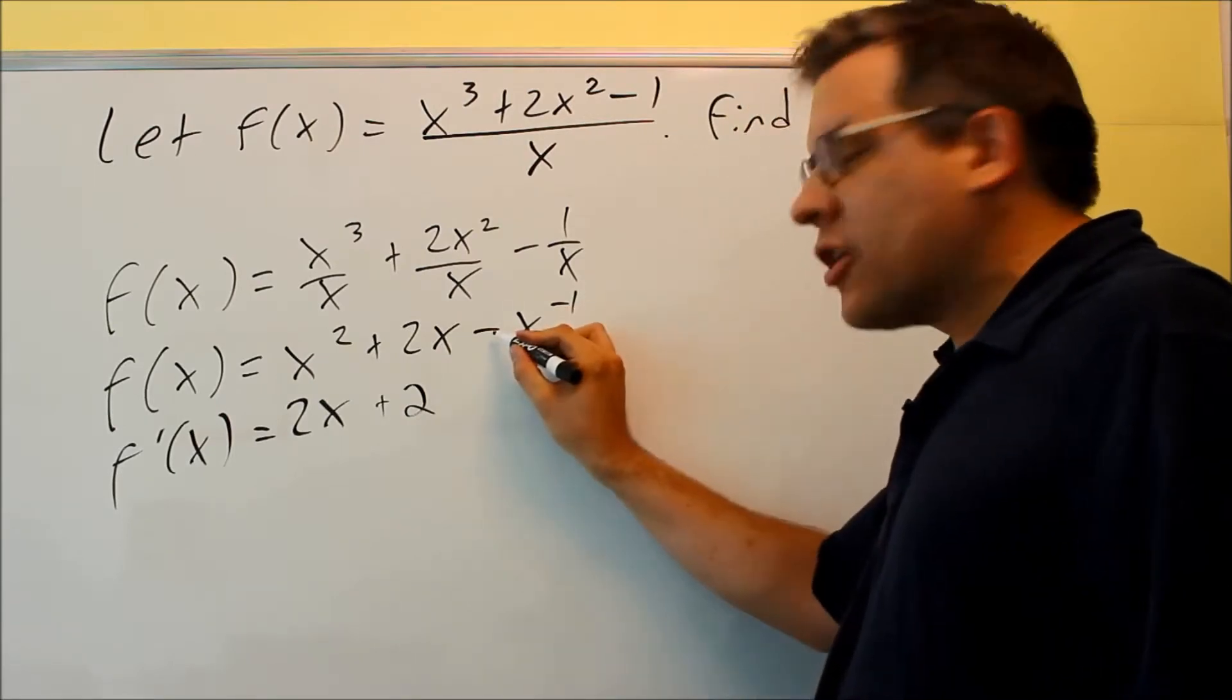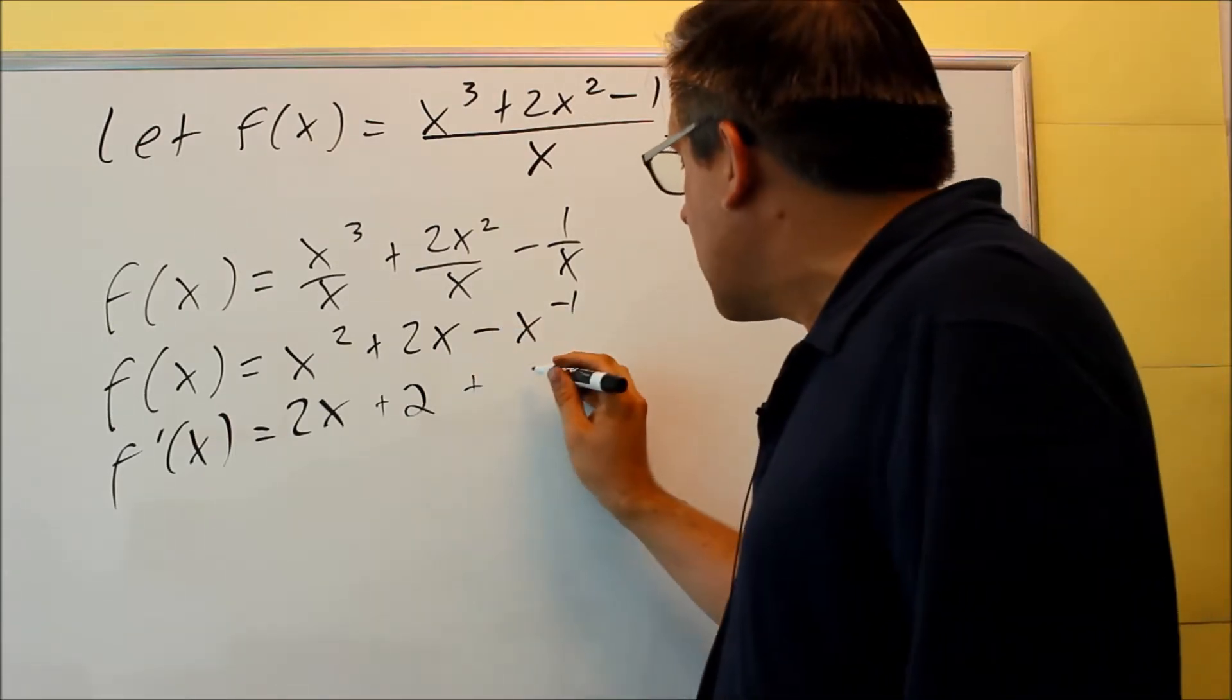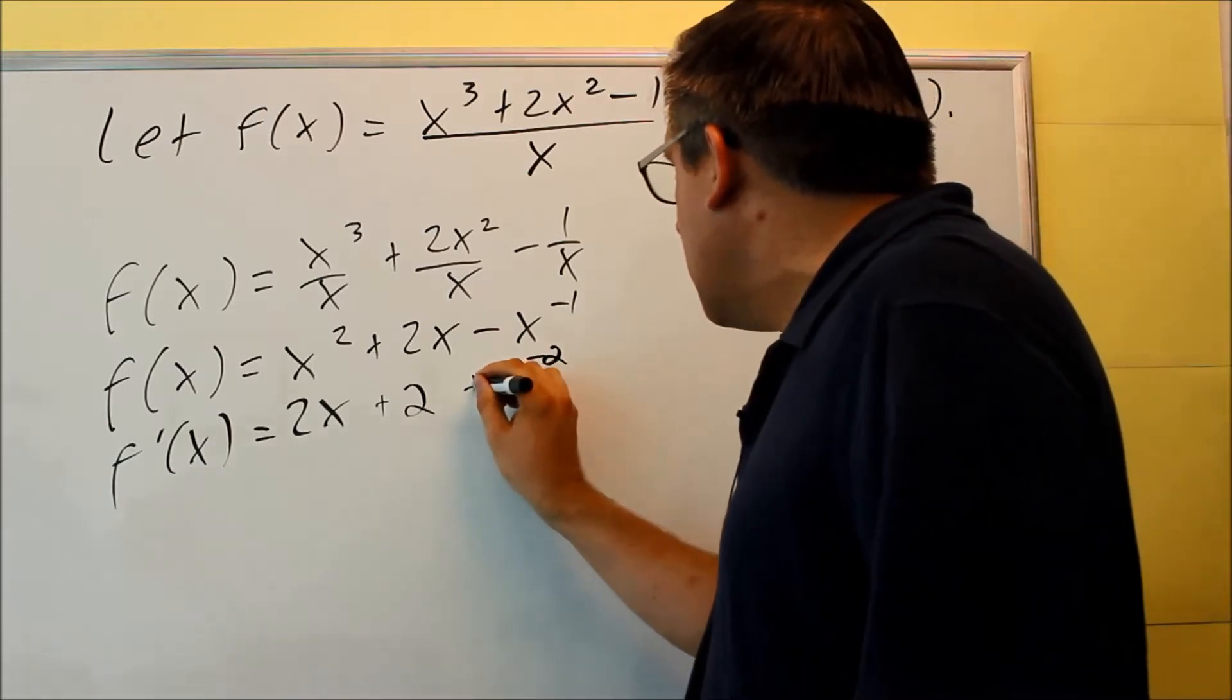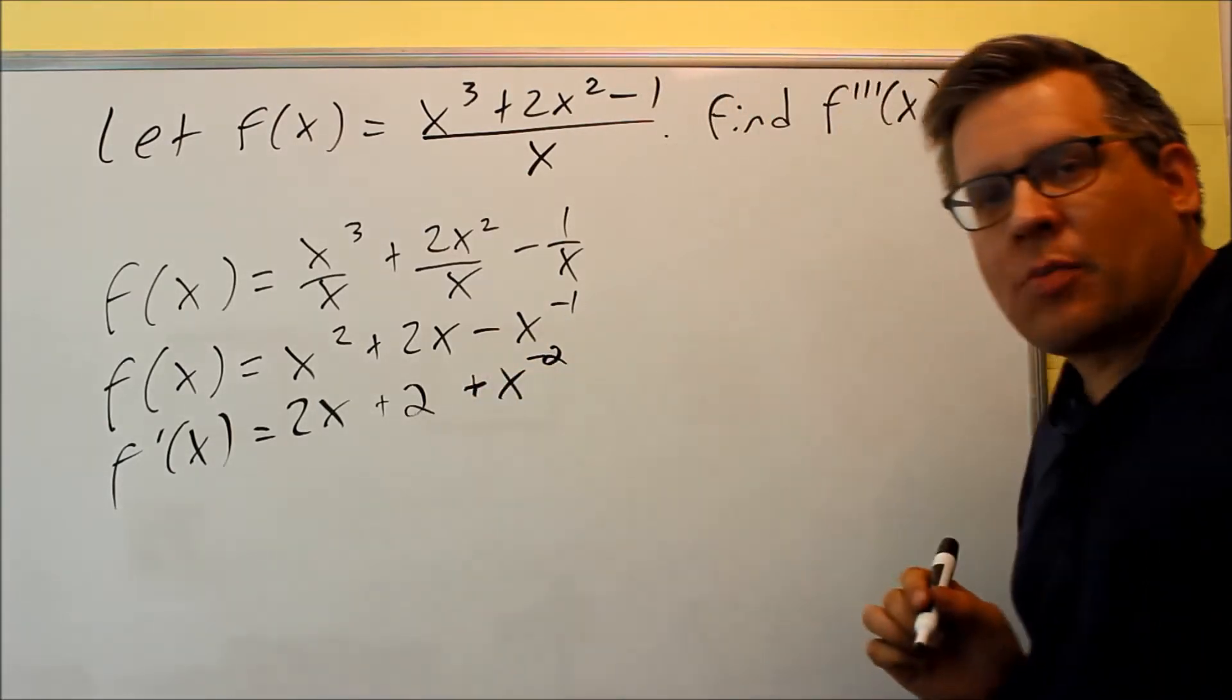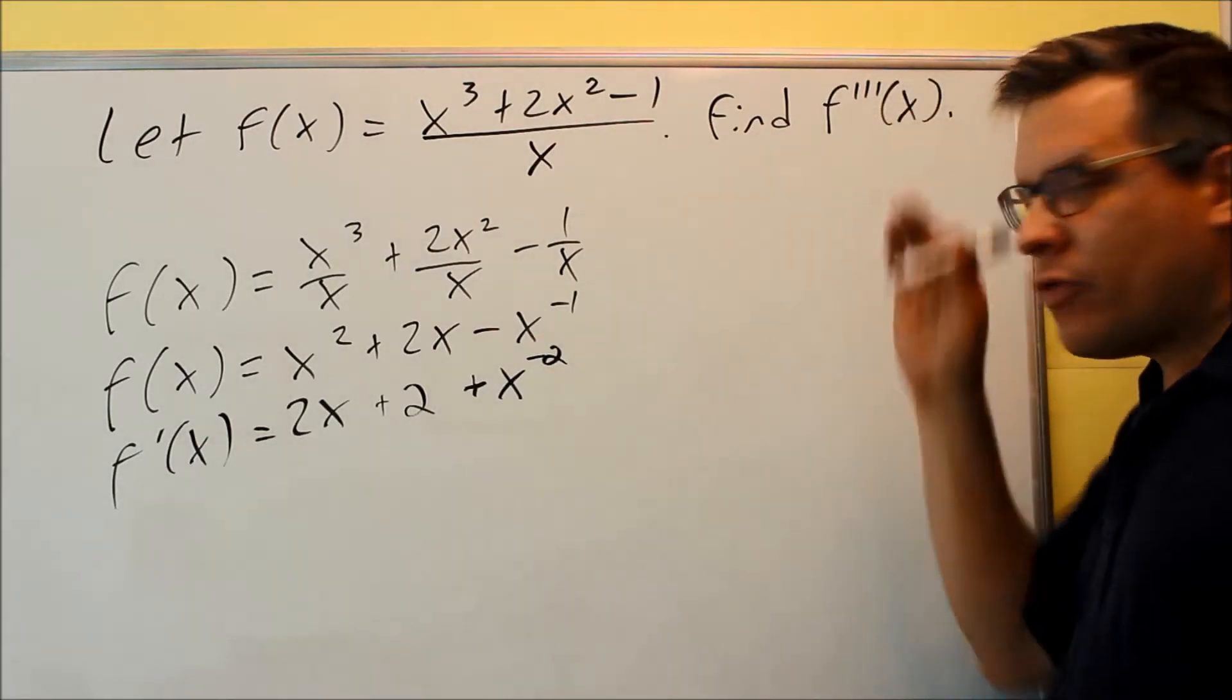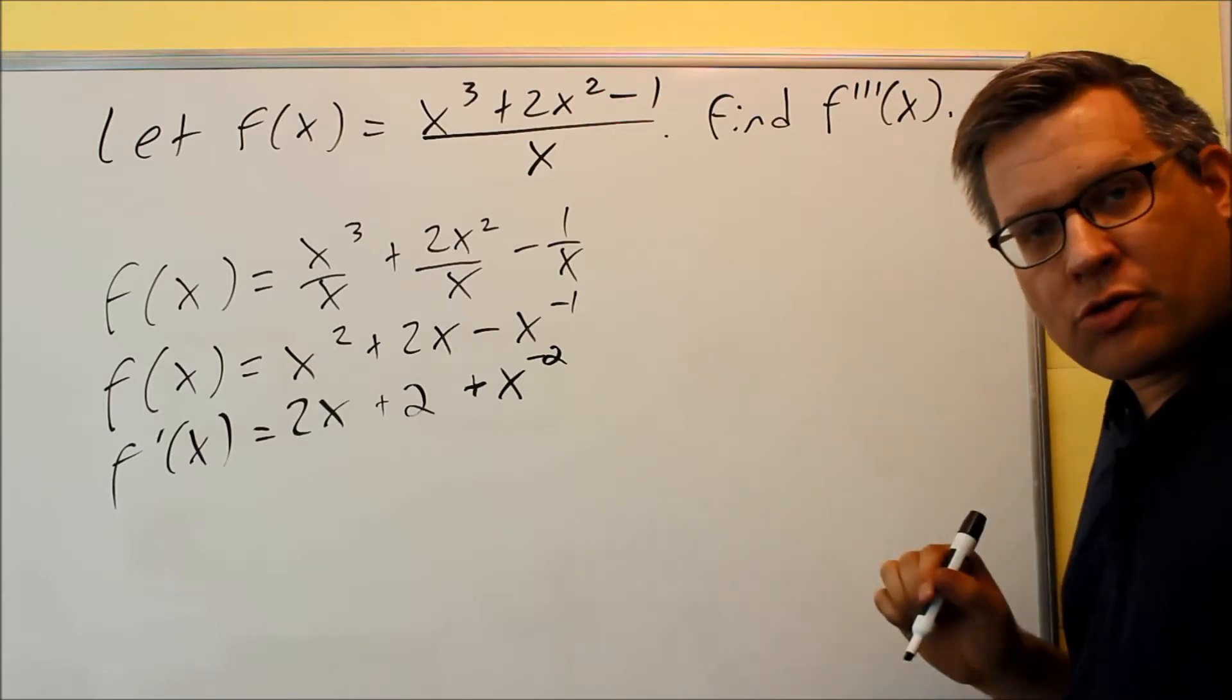This one, negative, multiplies by that negative, you're going to get a plus 1x. Subtract 1 from that and you get negative 2. Now you don't want to change it back into a fraction. You want to keep it in this format because we've got to find the derivative two more times. We've got to find the third derivative.